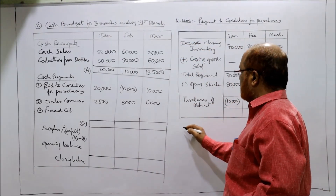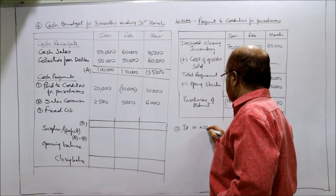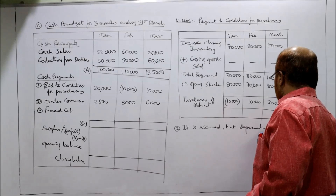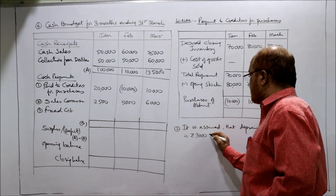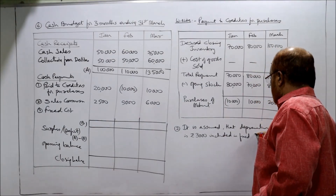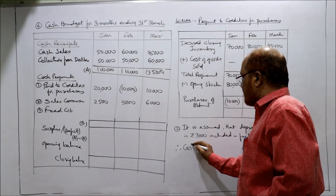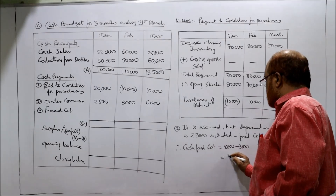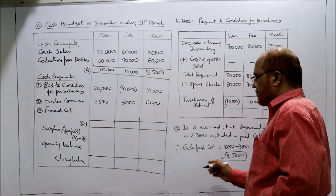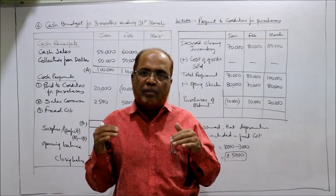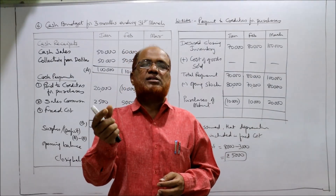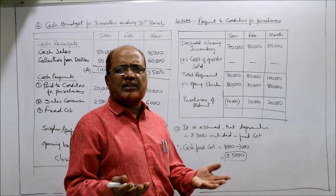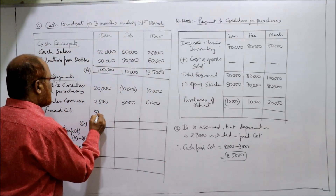Now, working note number 2 — write down here. It is assumed that depreciation is Rs. 3,000 included in fixed cost. Therefore, cash fixed cost is equal to 8,000 minus 3,000, which is equal to Rs. 5,000. Actually, it is purely based on assumption because in the problem it is not given how much depreciation there is. Simply a clue is given that depreciation is included in fixed cost, but how much is not given. So we make the assumption of 3,000. Rs. 5,000 is the cash fixed cost.